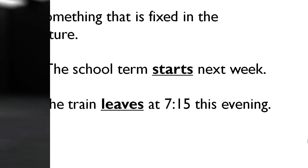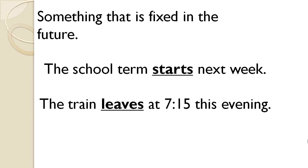Yes, that's right. Something that is fixed in the future — a date, schedule, events, calendar, birthday. The school starts next week. The train leaves at 7:15 this evening. So does that mean that every day the train leaves at 7:15? Absolutely, because it's something that is scheduled — something has a start time and end time. Like your curriculum for this month or this year — it does not change.